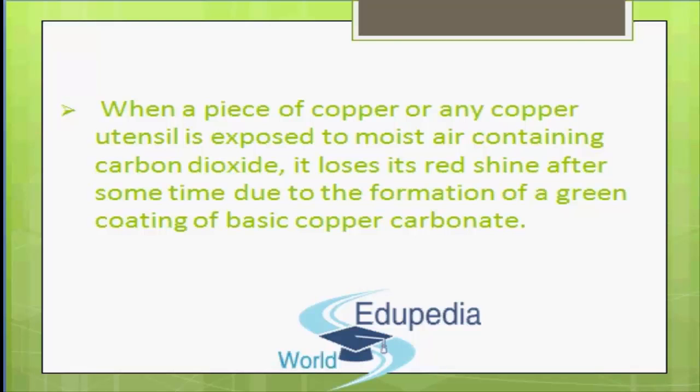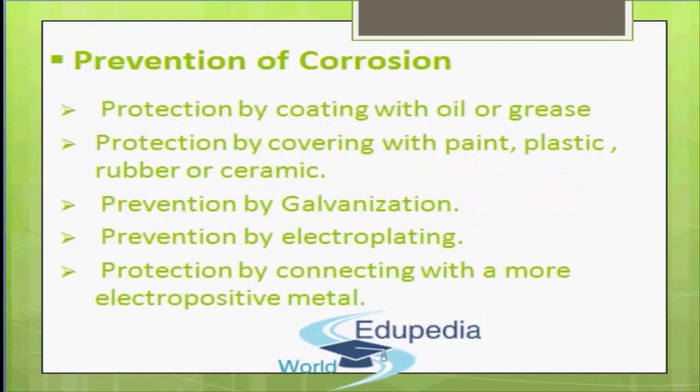Due to corrosion, replacement of iron and steel structures is costly. The conditions necessary for the occurrence of rusting of iron are air and moisture. Hence, the methods of prevention of corrosion must aim at protecting the metal from air and moisture.